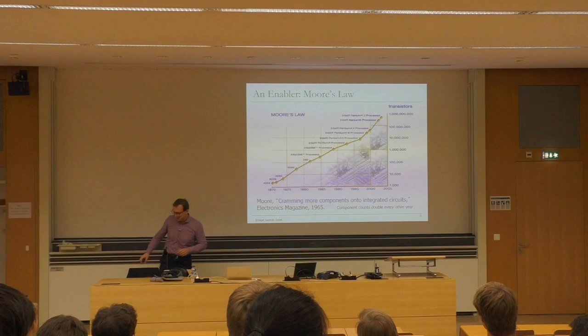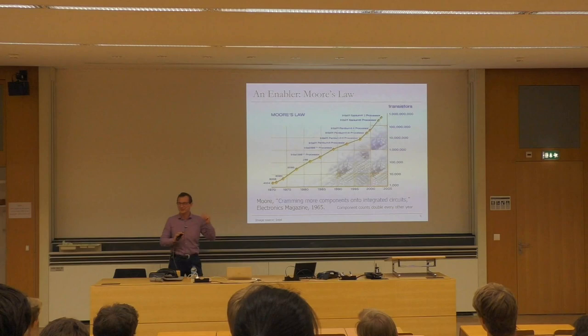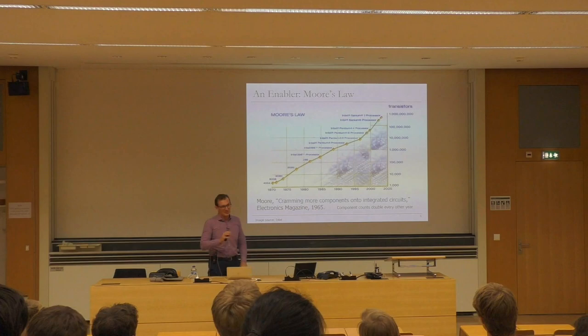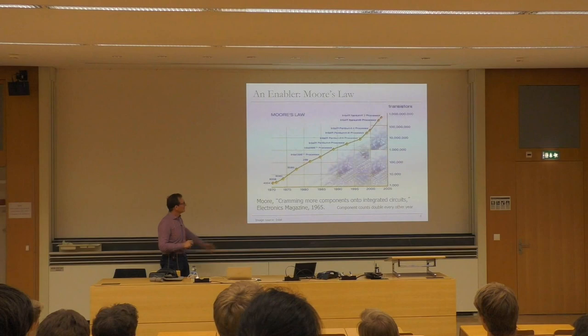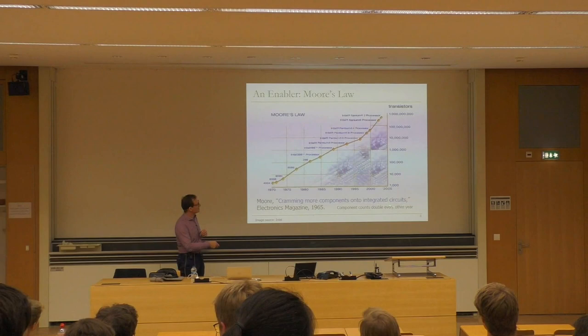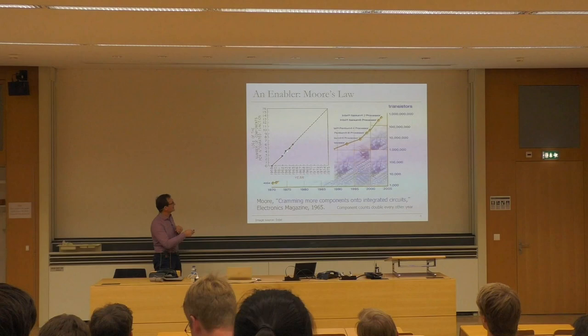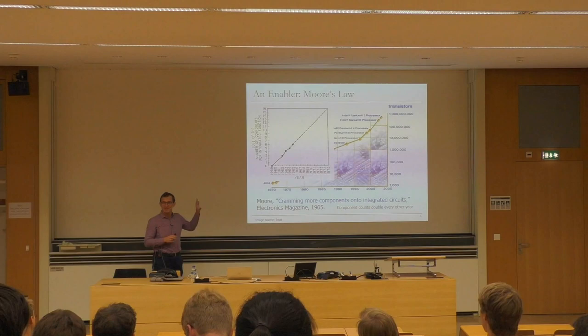An enabler is Moore's Law. People claim that it's ending. I tend to be a contrarian — I think it's not ending yet. It will end at some point, but it hasn't ended, and I'll provide you some evidence from the field. Moore's Law essentially says that we can put more devices in a given area and get good cost. This is an old picture going until 2005 — basically, you can have many transistors on a chip.